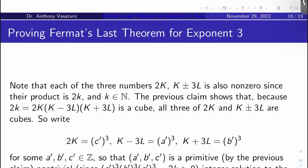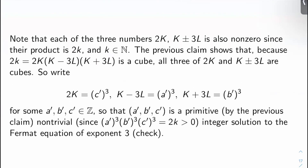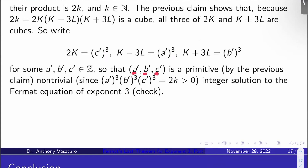Now we can prove Fermat's Last Theorem for exponent 3. Since 2K equals 2 big K times (big K minus 3 big L) times (big K plus 3 big L) is a cube, and all three factors are pairwise co-prime and nonzero, each must itself be a cube. Write 2 big K equals C prime cubed, big K minus 3 big L equals A prime cubed, and big K plus 3 big L equals B prime cubed. The triple A prime, B prime, C prime is a primitive non-trivial integer solution to the Fermat equation of exponent 3, because A prime cubed plus B prime cubed equals C prime cubed.